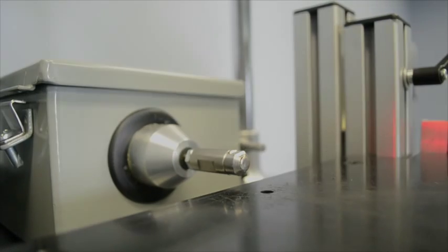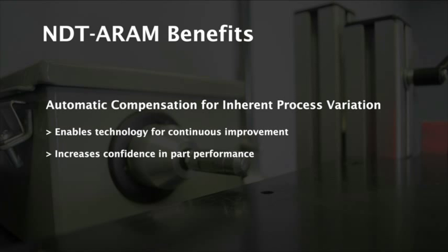ARAM compensates for variables such as part-to-part weight variation, lot-to-lot deltas in raw materials, tooling wear changes, and differences in mold cavities and production lines.